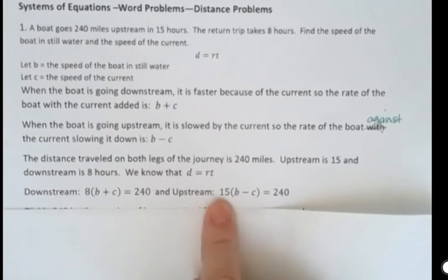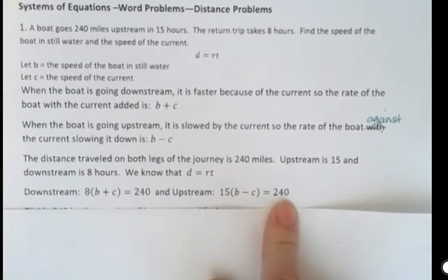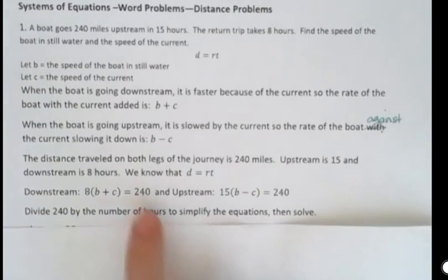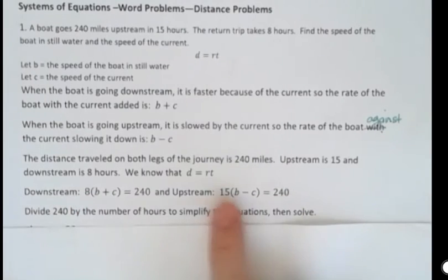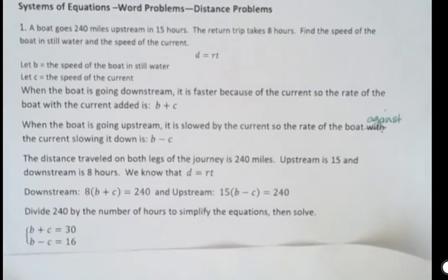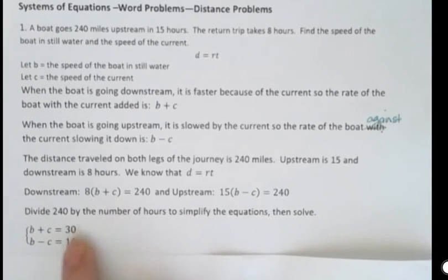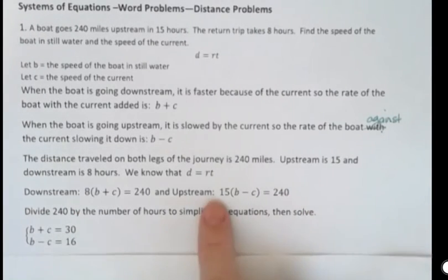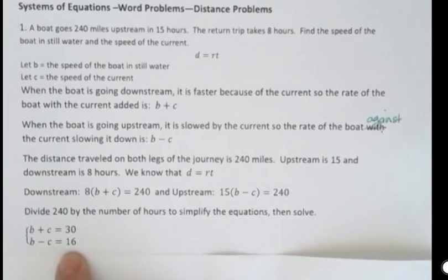Upstream, the time given was 15 hours. And we know upstream it was working against the current, so it was b minus c. Again, traveled 240 miles. What I'm going to do is divide both the 240 by 8 and 240 by 15 to give me an equation that looks a little nicer. And when I do that, 240 divided by 8 gives me 30. And 240 divided by 15 gives me 16. And that's the systems of equation that I want to solve then.